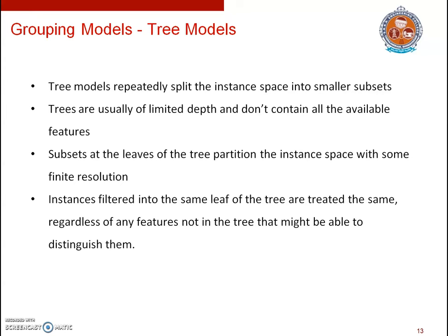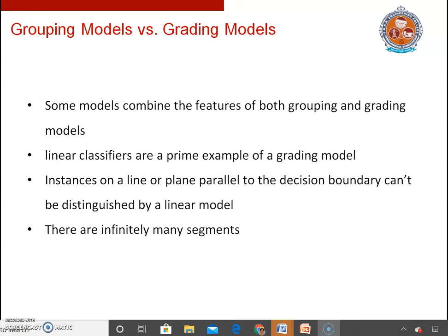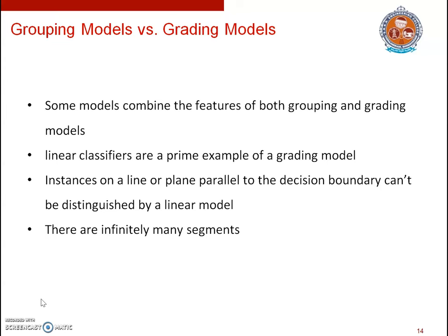Tree models are a good example of grouping models. They work by repeatedly splitting the instance space into smaller subsets. Because trees are usually of limited depth and don't contain all available features, the leaf subsets partition the instance space with some finite resolution. Instances filtered into the same leaf are treated the same regardless of features not in the tree. However, there is no clear distinction between grouping and grading models — some models exhibit both features. For example, linear classifiers exhibit both grouping and grading model features, and regression trees also combine both.